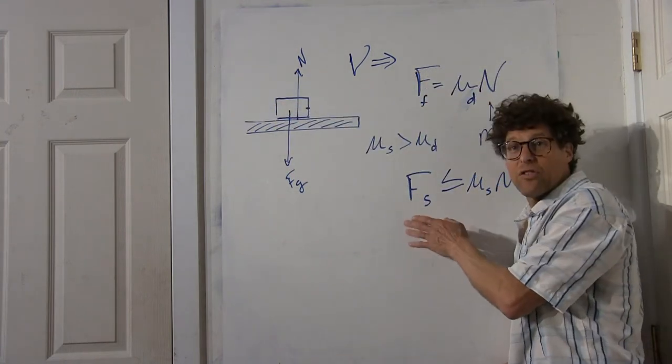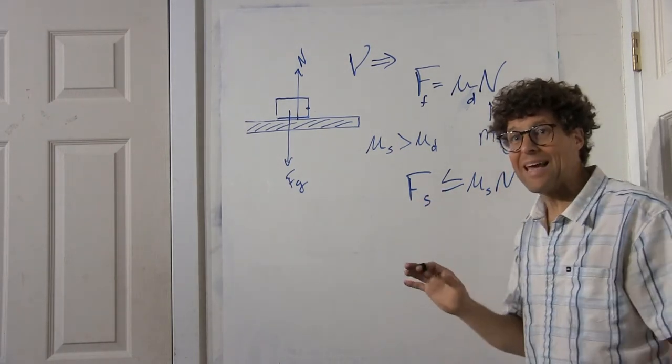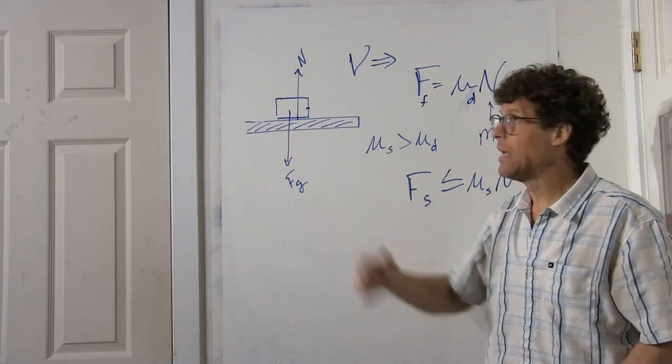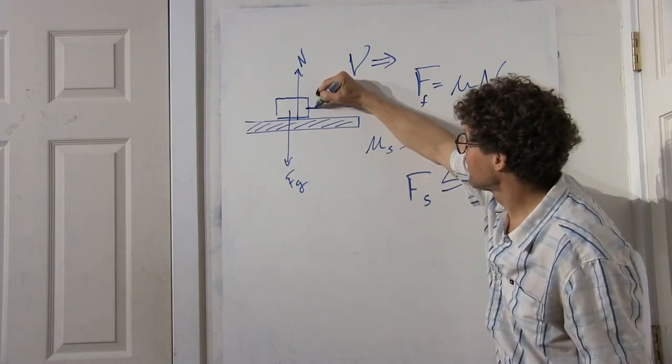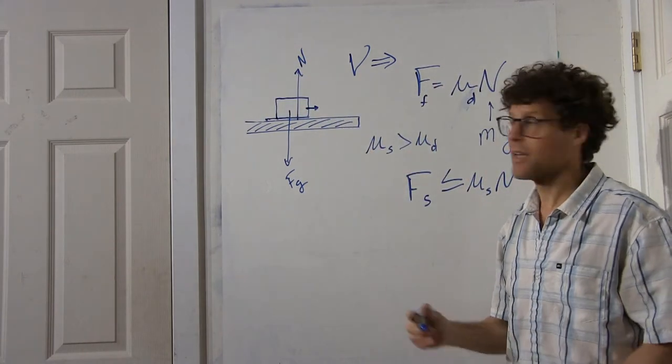For static friction, the frictional force will only ever be as big as it needs to be to keep the block holding still. If you pull a little bit on it with a little force, the frictional force will keep it static.